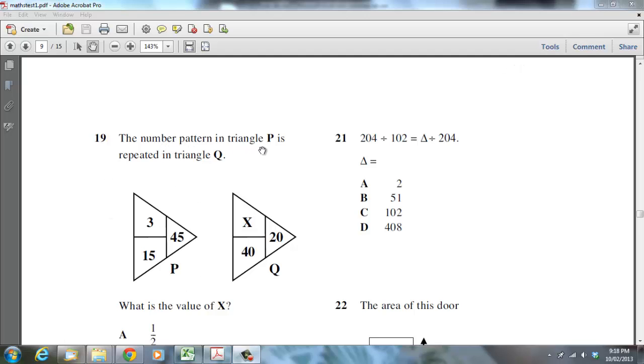The number pattern in triangle P is repeated in triangle Q. The first port of call is that you look at P because that will give you the pattern, once you find it, to apply to Q.